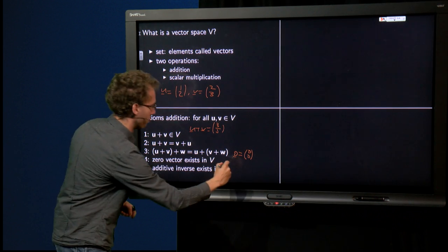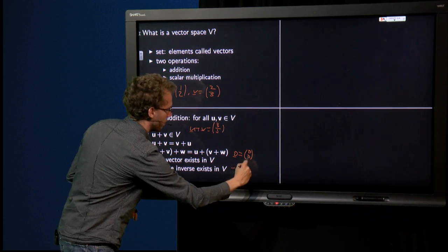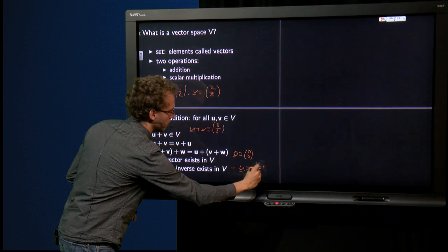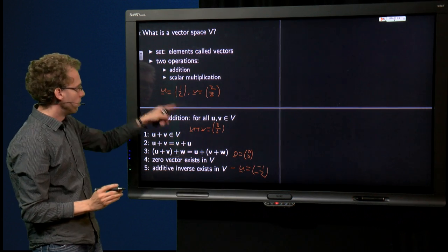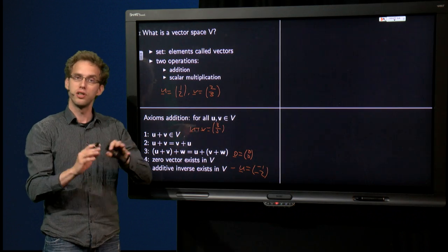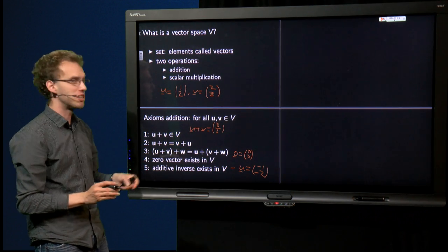Well, we have a minus u here, of course. Minus u is just (-1, -2). And if you would add that to u, then you get the zero vector. So for our normal vectors, all those properties are satisfied.